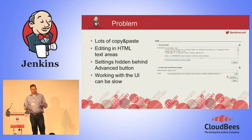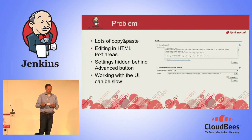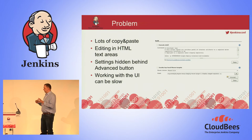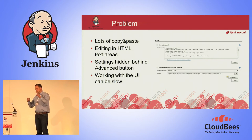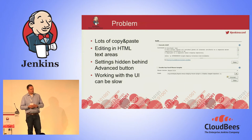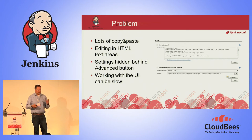So what's the obvious choice? When you start a new branch or set up a new team or a new project, you start by copying and pasting existing job configurations and editing stuff in HTML text areas. Your shell scripts are in there and you have to click through the advanced buttons to see if there are any additional options which need to be tweaked. The whole process is not very nice. Working with the UI can be slow if you have a large Jenkins instance, and it does not feel right.